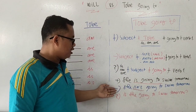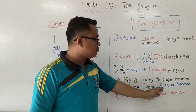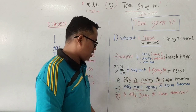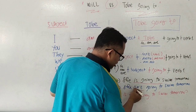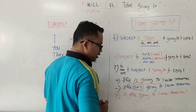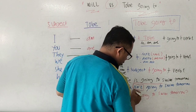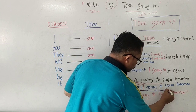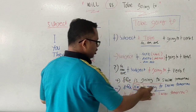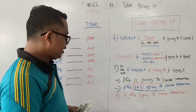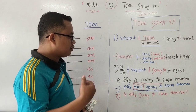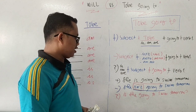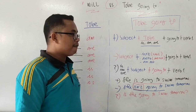For the negative example: 'She isn't going to swim tomorrow' — she will not swim tomorrow. For the interrogative: 'Is she going to swim tomorrow?' — meaning 'Akankah dia berenang besok?' — will she swim tomorrow?